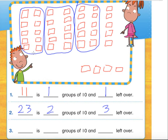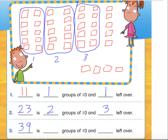Now we can quickly count how many we have all together. First we're going to count by our tens: 10, 20, 30. Then 31, 32, 33, 34, 35, 36, 37, 38, and 39. So number three, we have 39. And how many groups of 10? We have 1, 2, 3 groups of 10, so we have three.